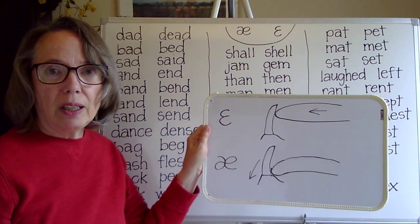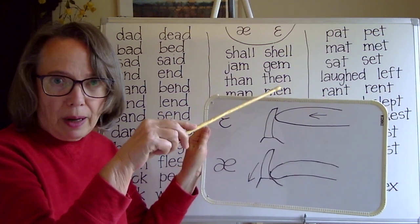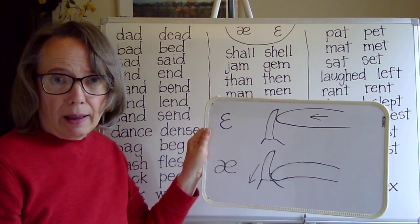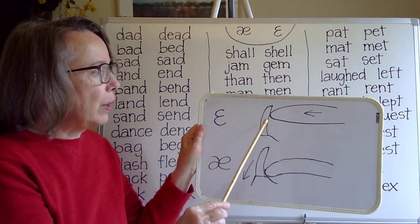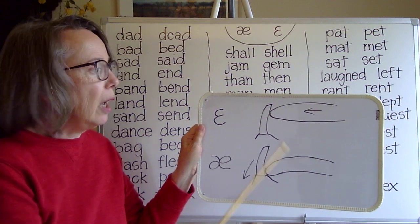Eh is directly above ah and your tongue moves up a little bit on your lower tooth.